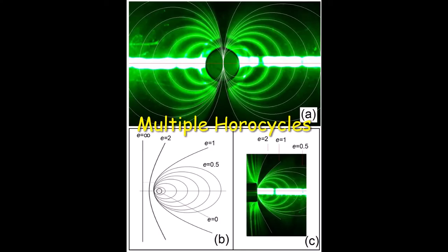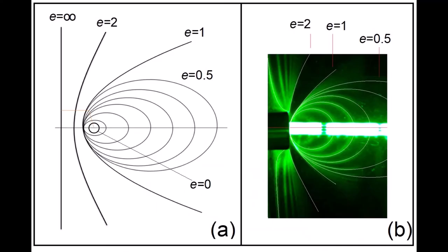With several light sources, we can observe several horocycles. They are conical sections.